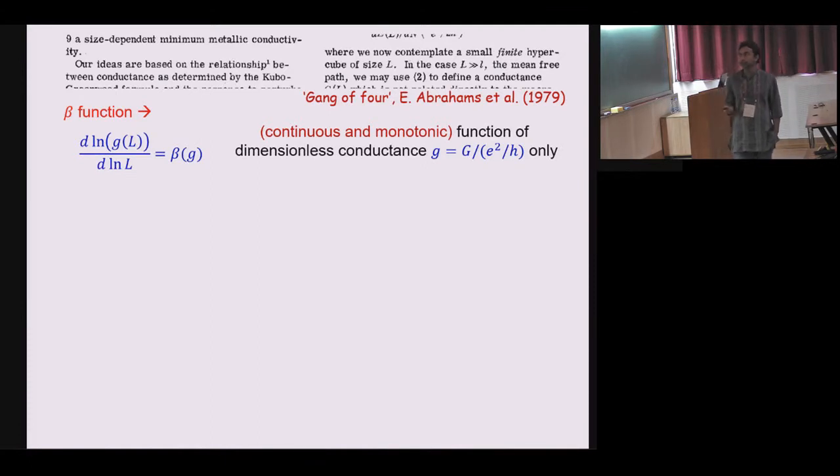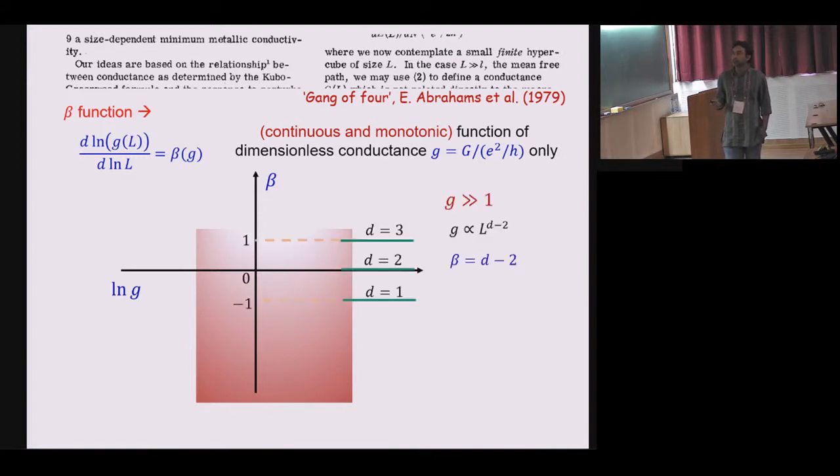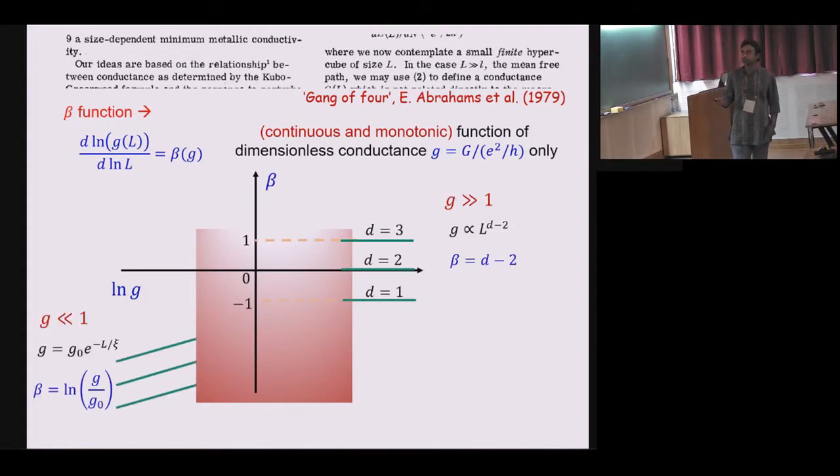And then they assumed that this function is continuous and monotonic. The main idea was that based on just these very simple assumptions, which are kind of ad hoc but simple, and knowing the asymptotic form of this function at very large conductances and at very small conductances, so at very large conductances it will be diffusive.